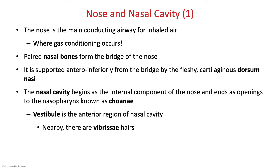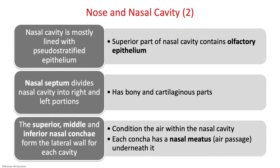The nose is the main conducting airway for inhaled air. Your nasal bones form the bridge of your nose, and you have a fleshy cartilaginous dorsum. The nasal cavity is right behind the entrance to the nose, lined with pseudostratified epithelium. Your nasal septum divides the nasal cavity into right and left portions. The conchae form the lateral wall for each cavity — you have superior, middle, and inferior nasal conchae. Beneath each nasal concha, there's an air passageway called a meatus.